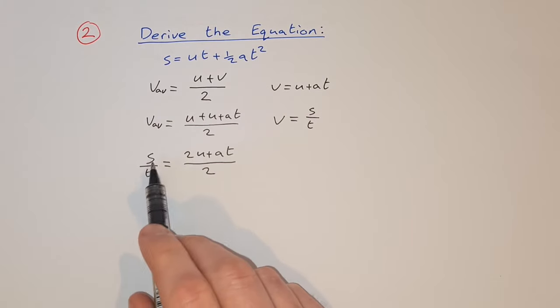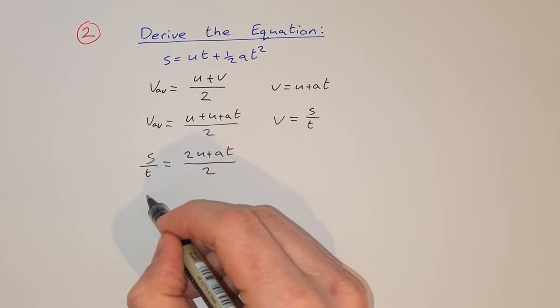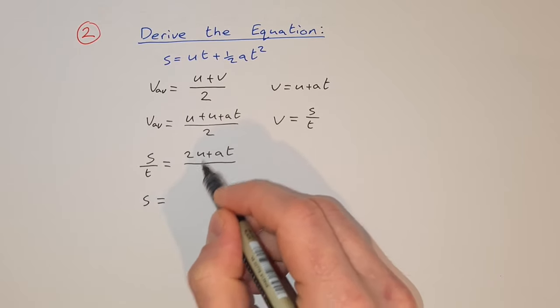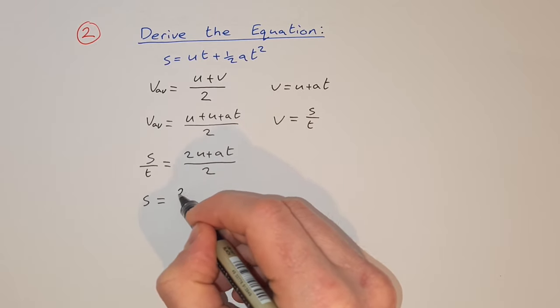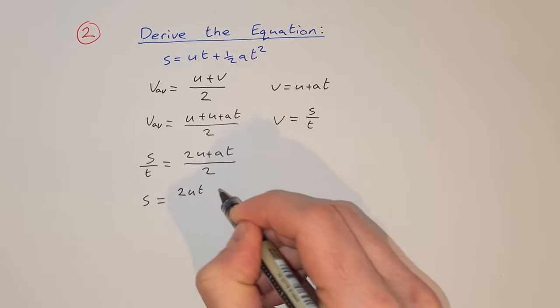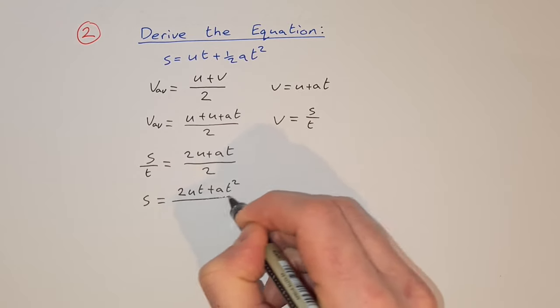So if I want to get s on its own, then I'll multiply across by t. So s equals t times 2u plus at, so that would be 2ut plus at squared over 2.